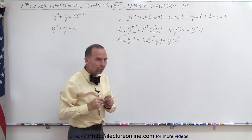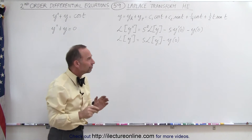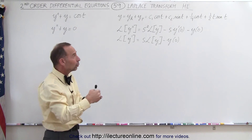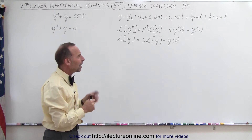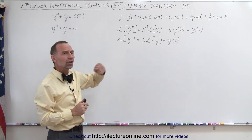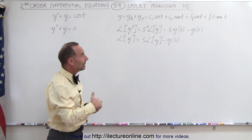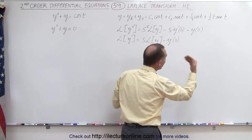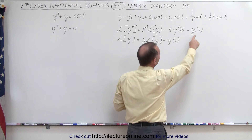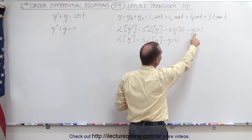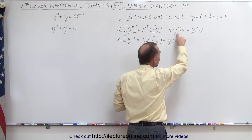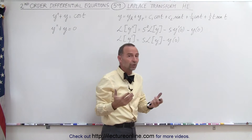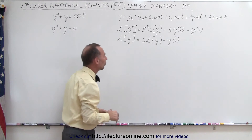Since we were not given the initial conditions for y and y prime, how do we handle that? Since we don't know the values, they will just be some sort of unknown constant — so each initial condition will simply be an unknown constant.